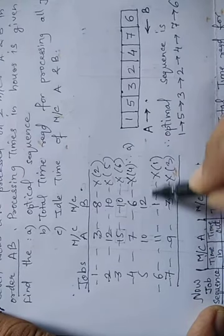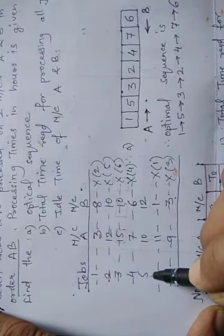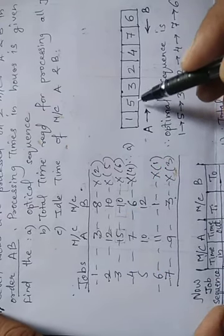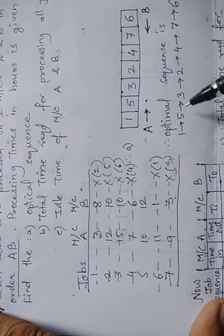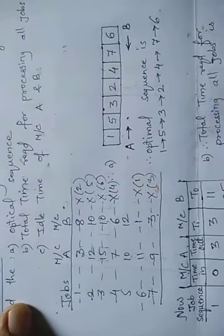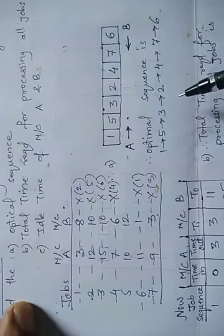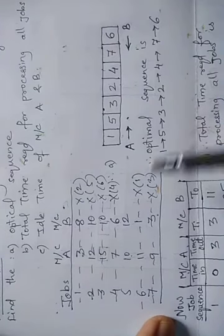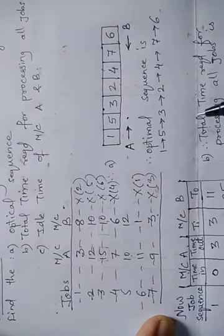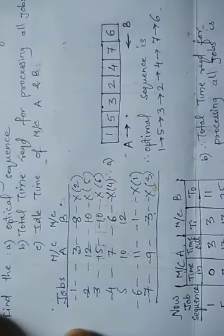The last remaining job is job 5 with a processing time of 10 hours under Machine A, so write job 5 from the left side. The optimal sequence is therefore: 1 → 5 → 3 → 2 → 4 → 7 → 6. This means we first process job 1, then 5, 3, 2, 4, 7, and finally 6, in this optimal order.